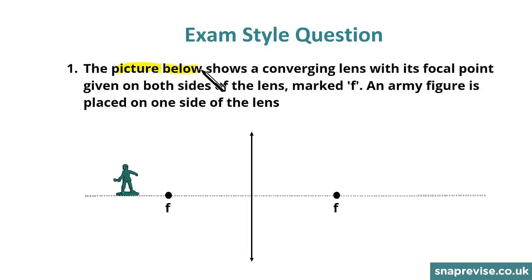We're told that the picture below shows a converging lens with its focal point given on both sides of the lens marked F. An army figure is placed to one side of the lens.